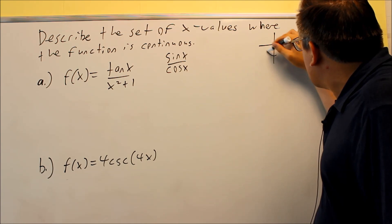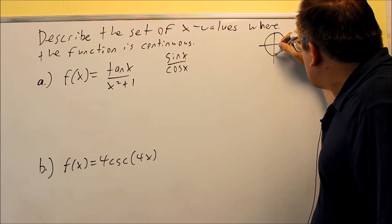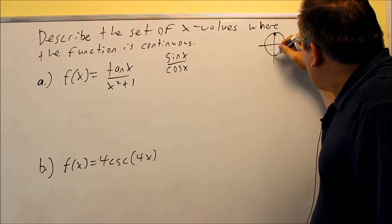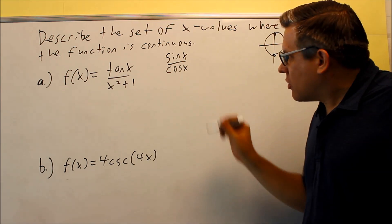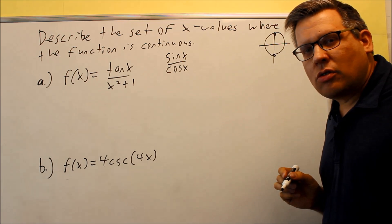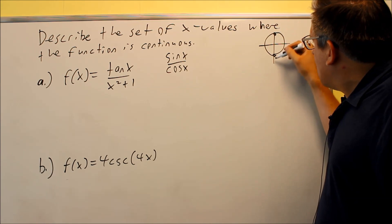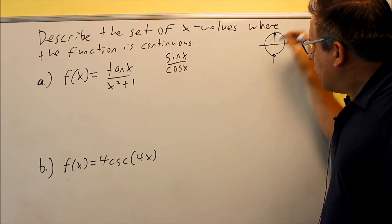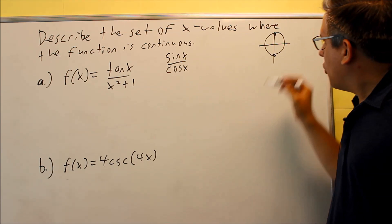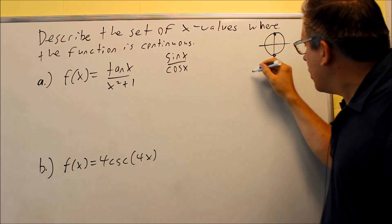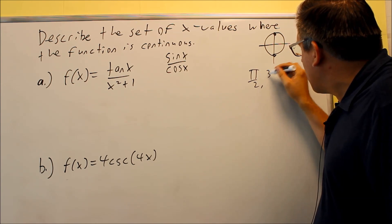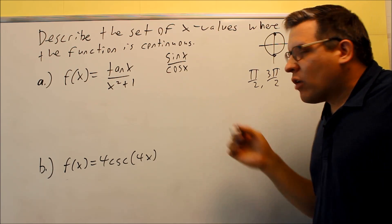To do that, I need to look at a unit circle and I'm looking specifically where the x value would equal zero on the unit circle because cosine is referring only to x values. So I see that your cosine is going to be zero when you're at pi over two and three pi over two.